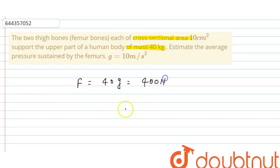And total area - each area of each bone is 10 centimeter square, and there are two thigh bones, so total area is 20 centimeter square.